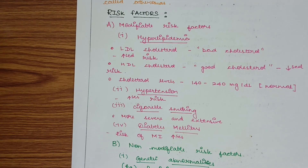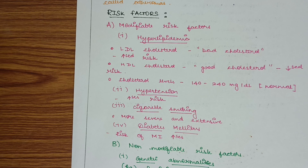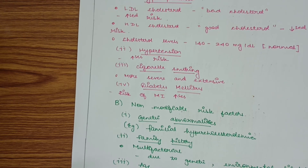Hypertension increases the risk of atherosclerosis. Cigarette smoking makes atherosclerosis more severe and extensive. Diabetes mellitus also increases the risk of myocardial infarction in atherosclerosis.